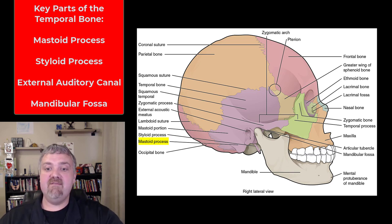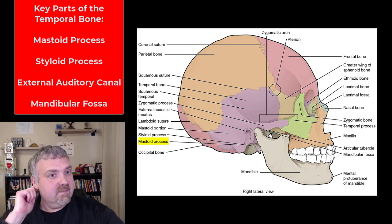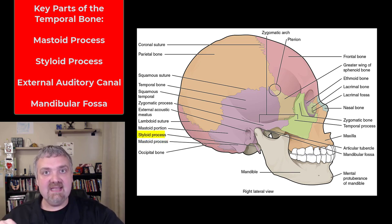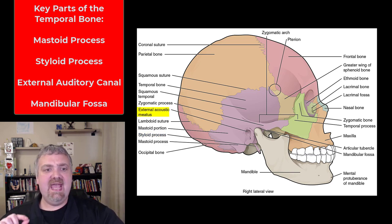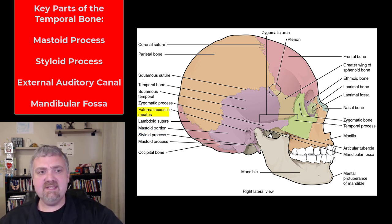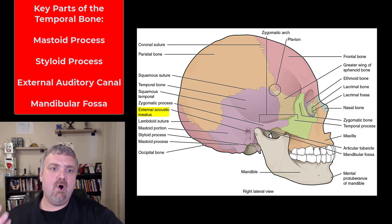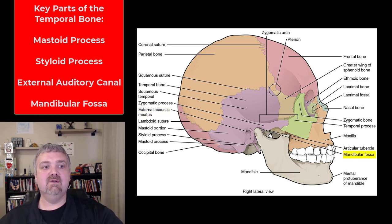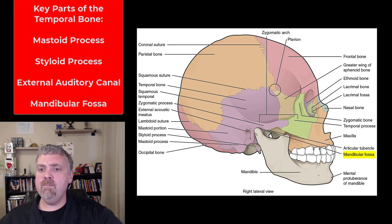The key prominences of the temporal bone: we have the mastoid process, which is the insertion for the sternocleidomastoid muscle. Then we have the styloid process — think of a stylus like a pen. We have the external acoustic meatus, also called the external auditory canal, which is the opening into your ear hole. And then we have the mandibular fossa, where the temporomandibular joint — your TMJ — is located.